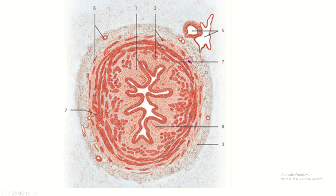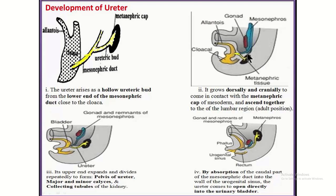The outer adventitia is formed by dense irregular connective tissue. The blood supply enters the tissue via perforating branches — in the adventitia these blood vessels form a plexus, from which perforating arteries arise, cross the muscular layer, enter the lamina propria, and form a mucosal vascular network.